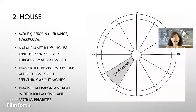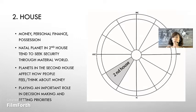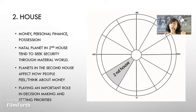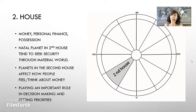Second house: money, personal finance, possessions. Natal planets in the second house tend to seek security through the material world. Planets in the second house affect how people feel or think about money, playing an important role in decision making and setting priorities. The second house determines the native's financial situation — how to earn money, how to spend it. We can understand our relationship with money by examining this house. The second house supports and strengthens what is started in the first house. We come into life in the first house and root ourselves in the second house, completing everything necessary to keep life going and sustaining ourselves with our talents. As we grow, we keep learning who we are through the positions we want to hold.